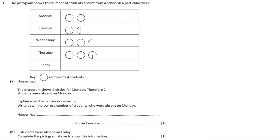Question 1. The pictogram shows the number of students absent from a school in a particular week. The key says one whole circle represents four students. Harper says the pictogram shows two circles for Monday, therefore two students were absent on Monday. Explain why Harper is wrong. It's because one circle represents four students, not one student. So with two circles on Monday, that's two lots of four, which is eight students absent on Monday. Harper has assumed that a circle represents one student, when really it's four. So the correct number should be eight students.